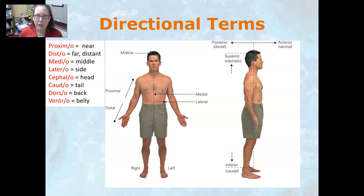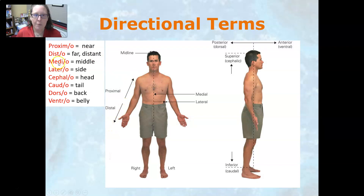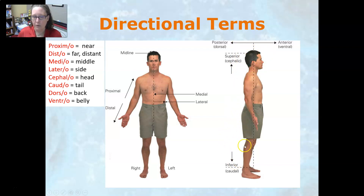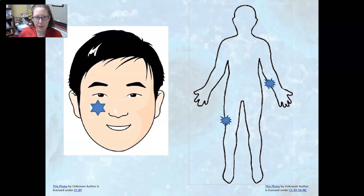Here they are illustrated with their respective combining forms. Proximal means near and distal means far or distance. Medial is for middle and lateral is for side. Cephalo is for head and caudal is for tail, so superior or cephalic is more towards the head, and inferior or caudal is more towards the tail end. Dorsal or posterior refers to the back of the body, and anterior or ventral refers to the front.